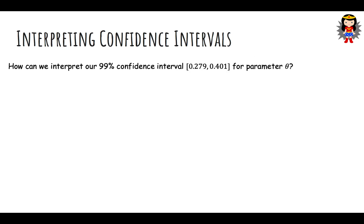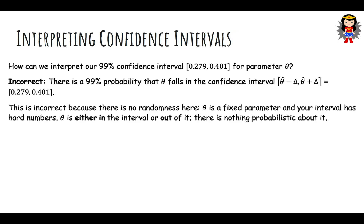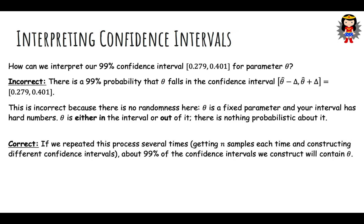How do we interpret a 99% confidence interval like the one we just constructed? You might think it's a 99% probability that theta falls into this interval theta hat minus delta to theta hat plus delta. This is actually wrong because theta is some number that you don't know. It could be like 0.4, for example. We already constructed our confidence interval to be [0.279, 0.401]. There's no probability involved here - it's either in the interval or it's not.